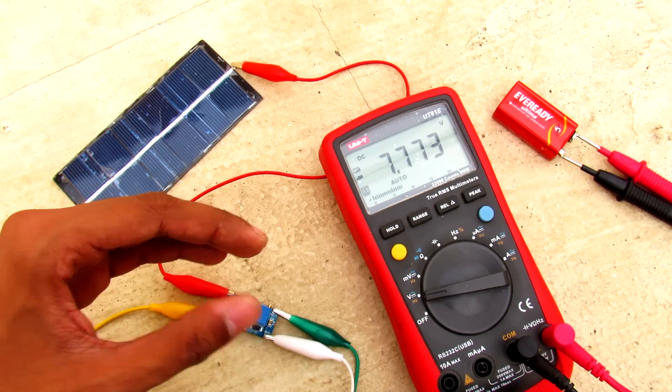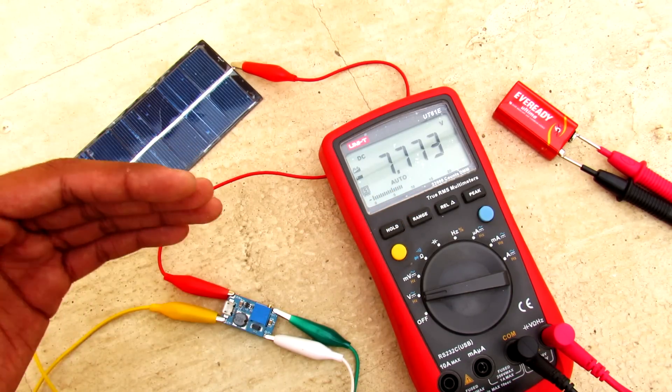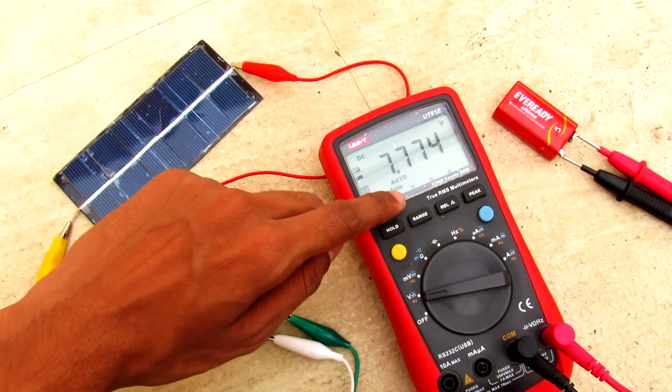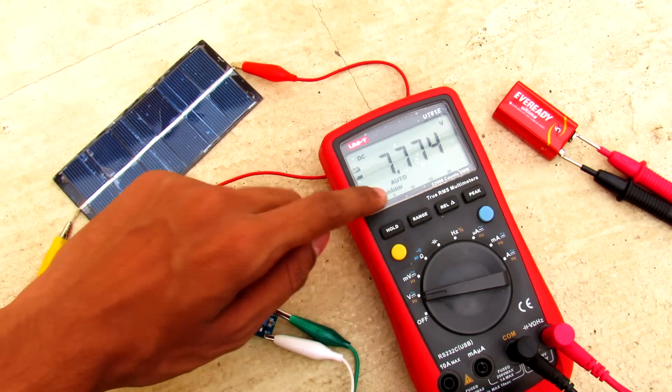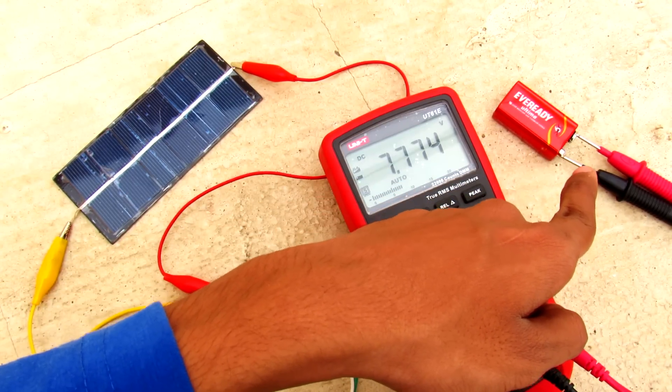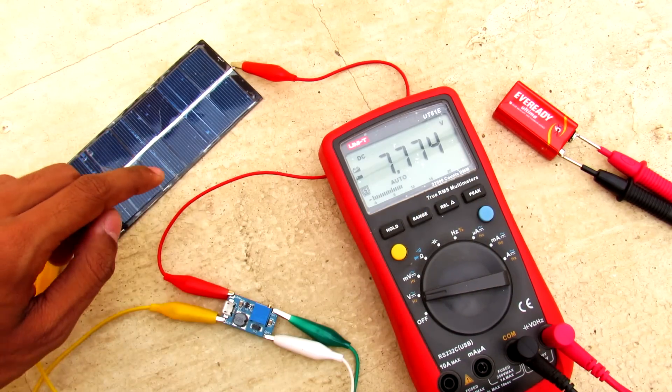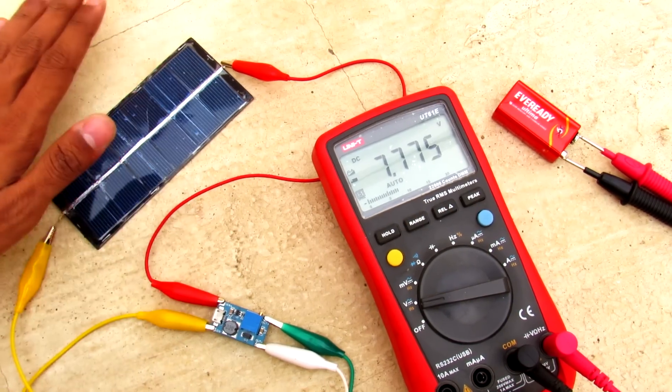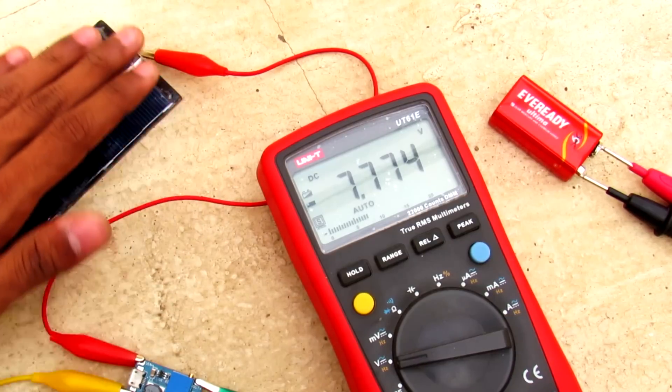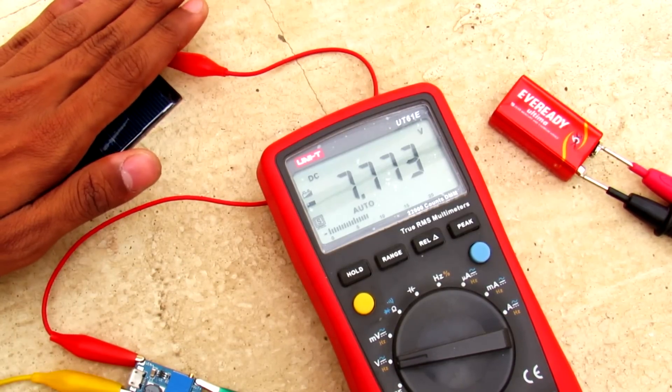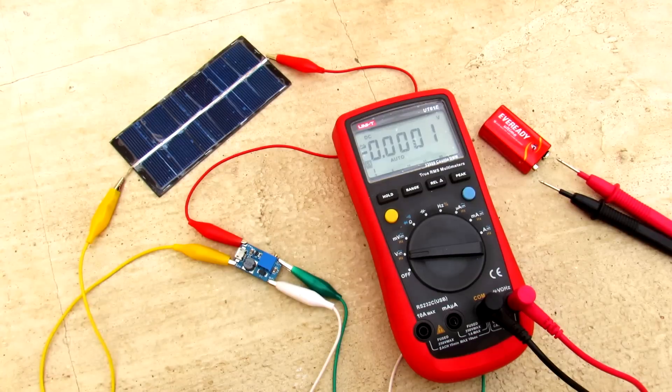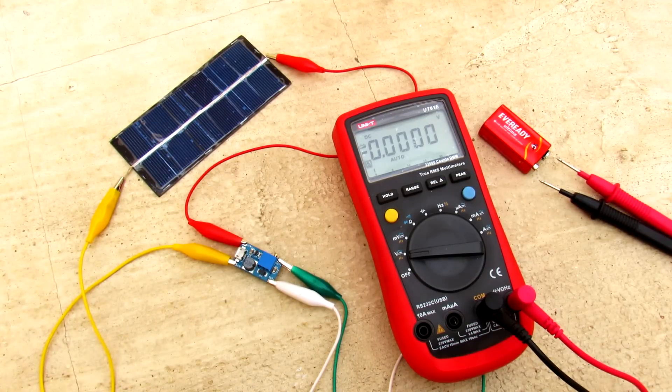So let me show you that. Now I'm measuring this battery voltage here and you can see that when I cover the panel it will not change majorly. If I cover it fully, the multimeter will just shut off.